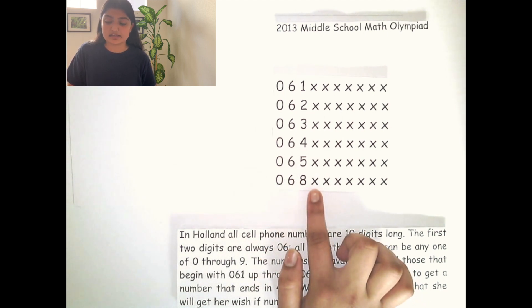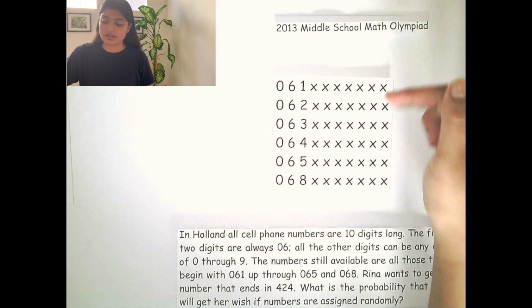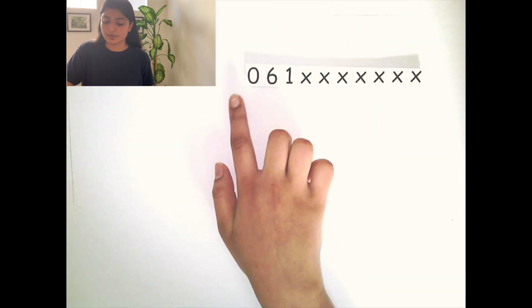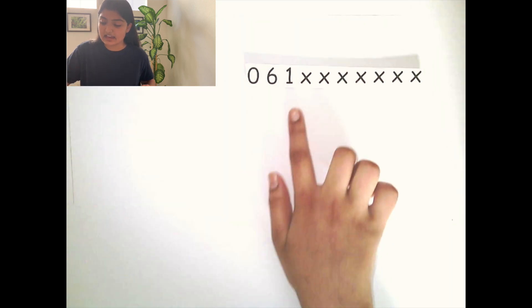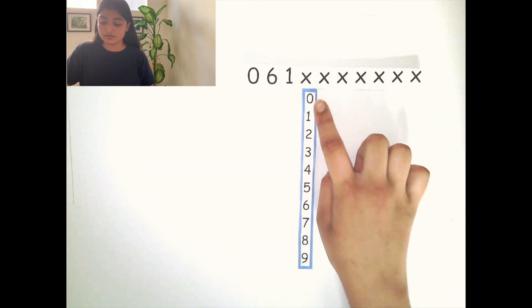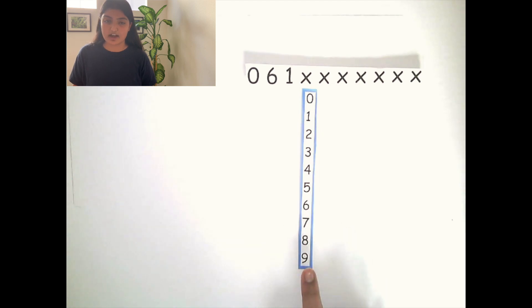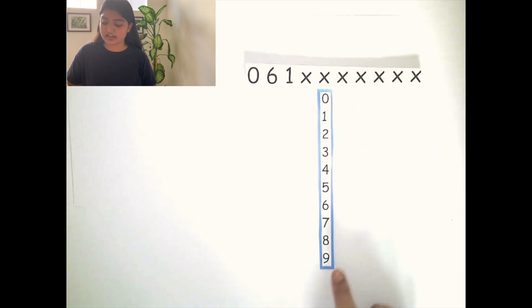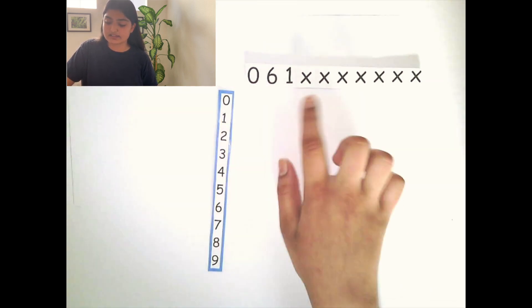These x's act as placeholders for the digits in places that are yet unknown. To find the total possible phone numbers for a number beginning with 061, we note that each of the remaining 7 places can be any digit from 0 to 9, giving 10 possible values per place.